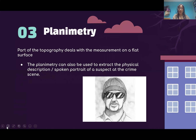Then you have planimetry. Planimetry is a part of topography that deals with the measurement of a flat surface. For example, if they give you a piece of land, you have to draw a representation on top of it without making it too large or too small — that's planimetry. But planimetry can also be used to get a physical description or spoken portrait of a crime scene or a suspect. This is really helpful because maybe a person quickly saw the one who was at the crime scene, and that description could be the lead into catching the culprit — or not catching them at all.